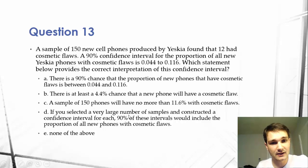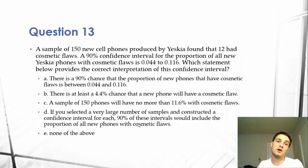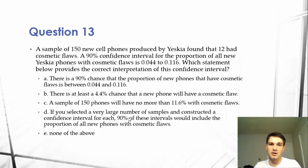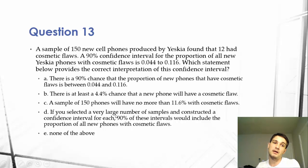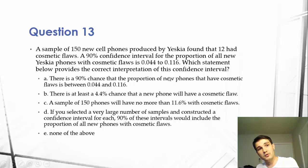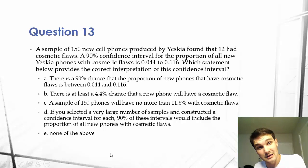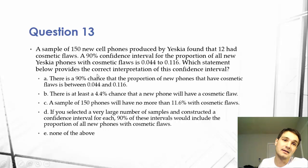Answer D: if you selected a very large number of samples and constructed a confidence interval for each, 90% of these intervals would include the proportion of all new phones with cosmetic flaws. This is the best answer — this is really the definition of what a confidence interval is. The problem with A is that we're talking about the proportion of all phones, not just these 150 phones. The correct interpretation of this confidence interval is D.